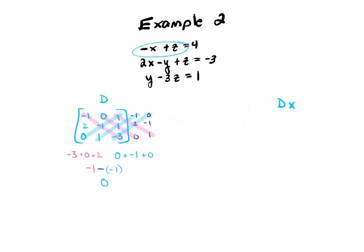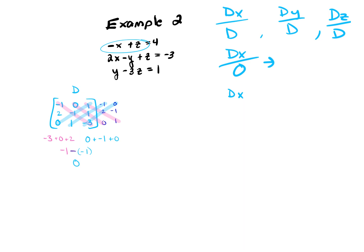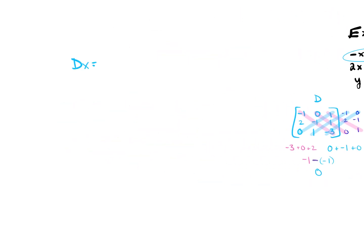We have an issue here — because if we find D sub X over D, D sub Y over D, D sub Z over D, and we plug 0 into the denominator, dividing anything by 0 gives us an undefined result. So the answer would be no solution. If D sub X were 0 and D were a number like 6, then 0 divided by 6 would be 0 — that's fine. But 6 divided by 0 is undefined, which means no solution.